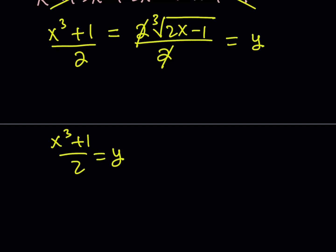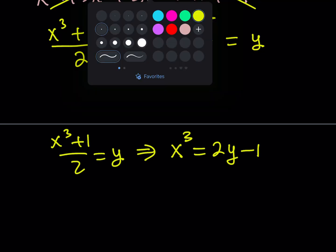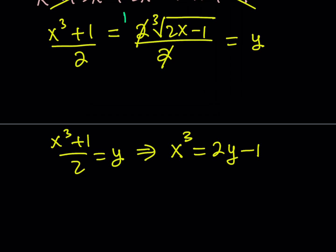When I set this equal to y, I'm actually getting two equations from here. One of them is x cubed plus 1 over 2 equals y. From here, I can isolate x cubed. Multiply both sides by 2 and subtract 1, and this gives me x cubed equals 2y minus 1.